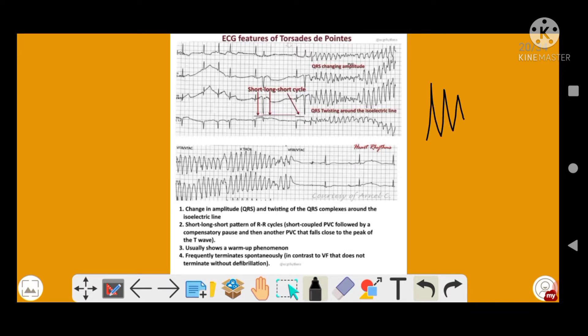It will come somewhat like this. So the QRS amplitude will be changing, right? Here it is more, then there will be low, then again there will be more. So the QRS amplitude is changing.